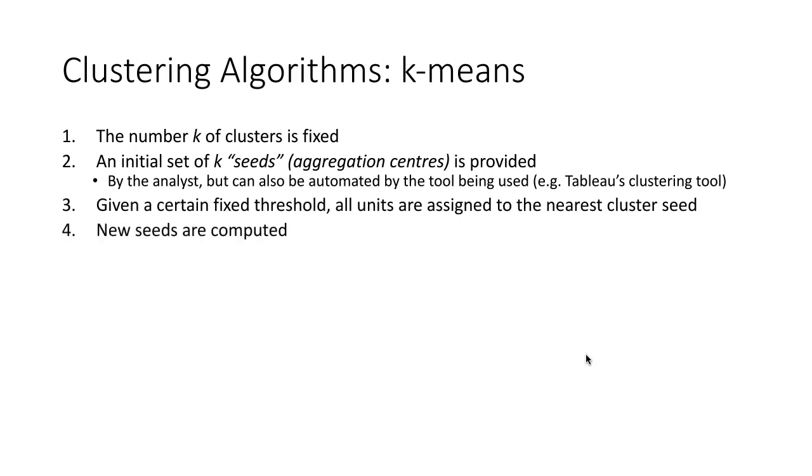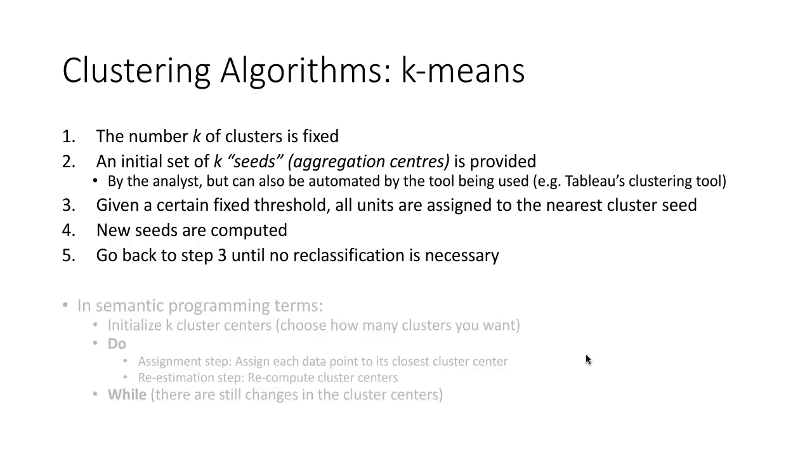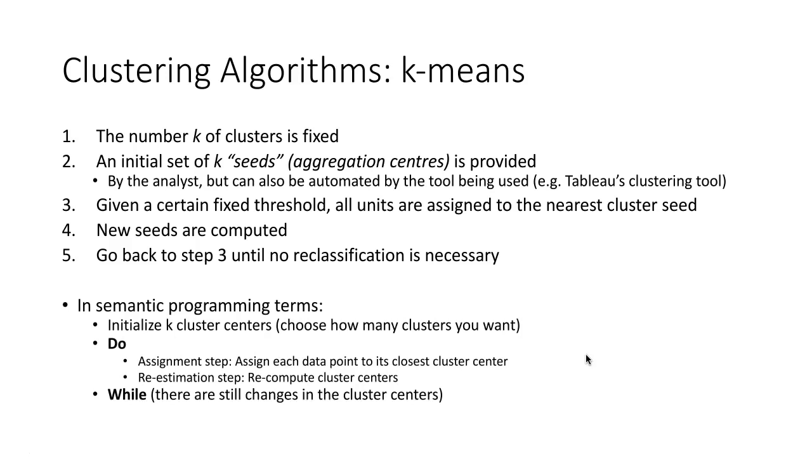We're going to have a certain fixed threshold. I'm going to show you exactly what I mean by that. It's easier to show you. And, then we compute new cluster centers as we continue to assign cases or units to each of the nearest cluster seeds. Then, we're going to repeat, go back and forth repeatedly until each time we recalculate cluster centers for each case or distances of each case to the center of each cluster, no more new cluster assignments are made. So, if you're a programmer, basically, we've got this do-while loop. We're going to repeatedly assign each case to the closest cluster center, re-estimate the cluster centers, and then repeat until there's no more reassignments of data points to a cluster center.